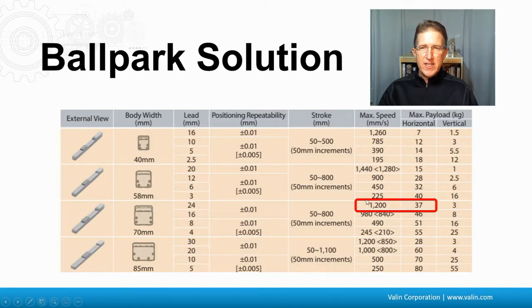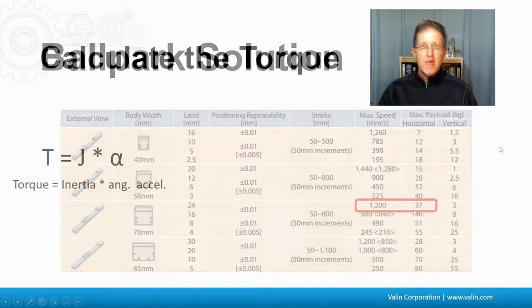So if we take a look here, I find that I don't have one that goes up to 1,600 millimeters per second. But I do have one that goes to 1,200 millimeters per second as the max speed, and it handles that 37 kilograms, which is more than 30 that I have. So this actuator right here looks like it is a good choice.